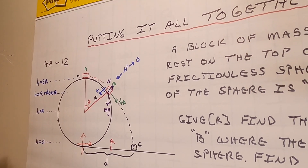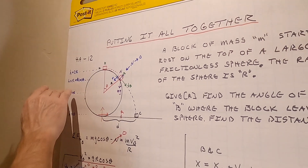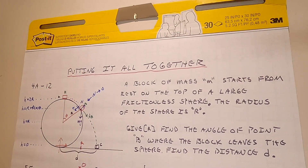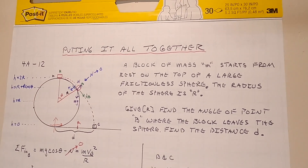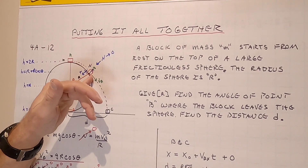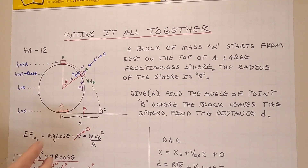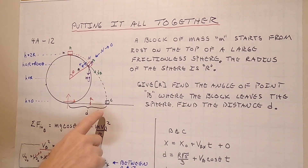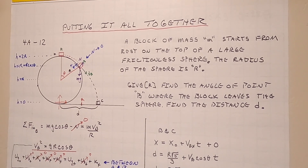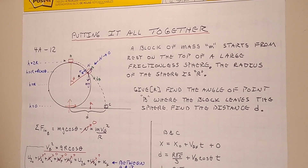You had a similar problem on the homework in chapter 7 — the only difference was a hemisphere instead of a full sphere. This problem puts together energy conservation (from the top to the departure point to find the speed) with projectile motion (from the departure point to the ground). You could add a spring, a bounce off the ground, or other elements, but this was enough to illustrate the combination.